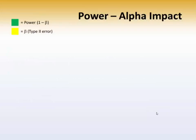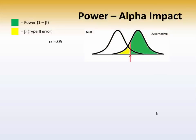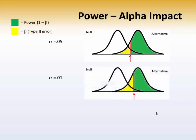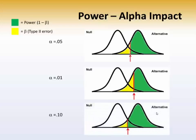Remember, the green represents power, the yellow represents beta or a type 2 error. Here we have two distributions with alpha equal to 0.05, with the critical value indicated by the red arrow. Notice how much power you have and how little type 2 error you have. Now let's change alpha to 0.01 — we moved the critical value out from 1.96 to 2.58, and power has decreased while beta has increased. You have less chance of making a type 1 error, but more chance of making a type 2 error. What if we changed alpha to 0.10? You've increased the probability of making a type 1 error, but decreased the probability of making a type 2 error — that is to say, you've increased the power.